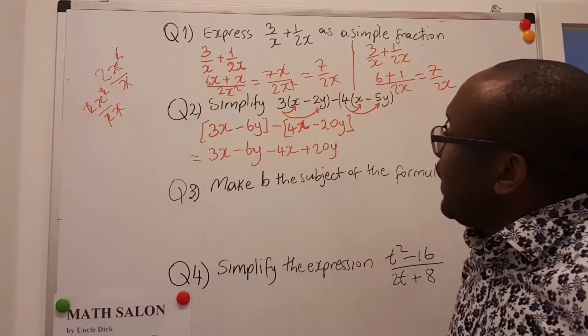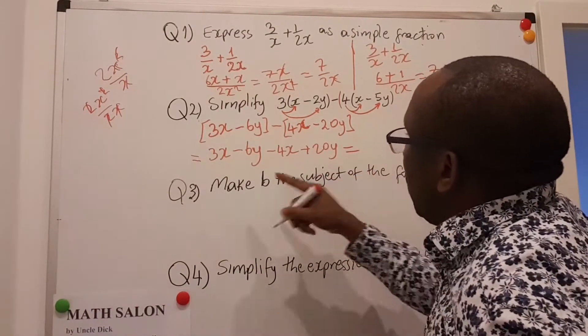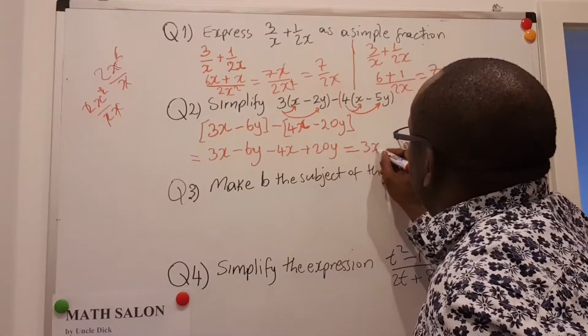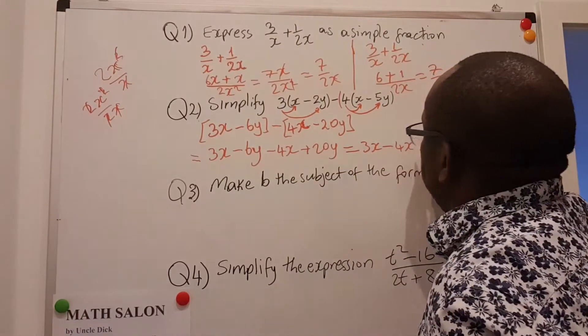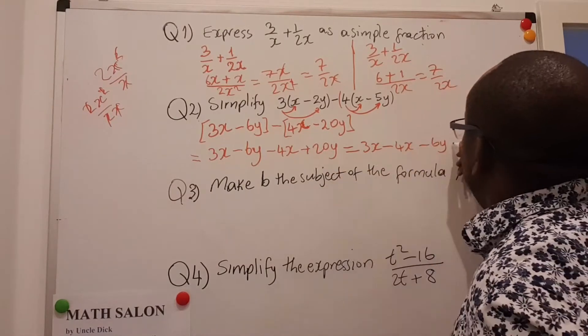Now we try to gather the like terms together. The y's together and the x's together. So I have 3x there, minus 4x, minus 6y plus 20y.